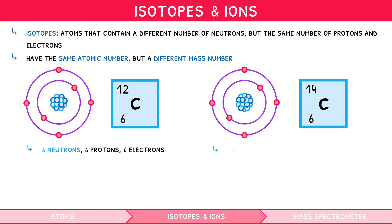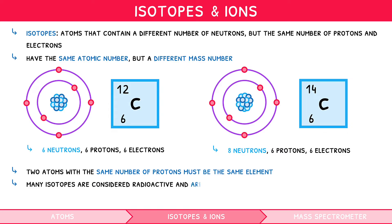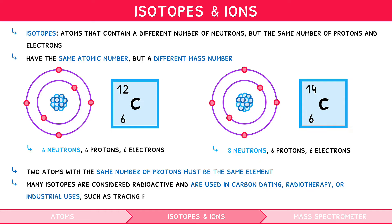So, carbon-14 has eight neutrons, six protons, and six electrons. Remember, protons are what makes an atom a specific element, so two atoms with the same number of protons must be the same element. Many isotopes are considered radioactive and are used in carbon dating, radiotherapy, or industrial uses such as tracing pipelines.